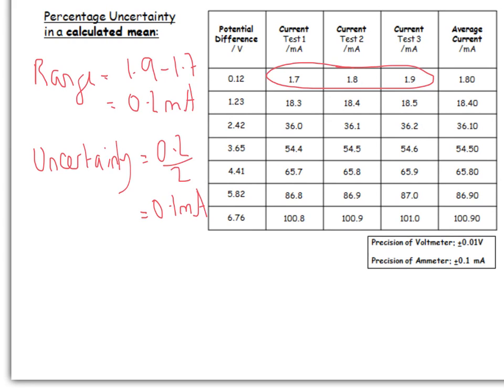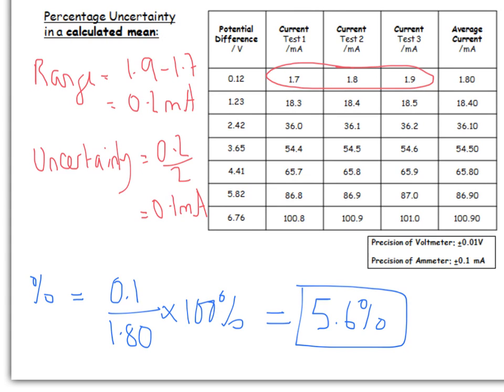Which means your uncertainty is going to be 0.2 divided by 2, which is 0.1 milliamps. Again, remembering to include the unit. So then your percentage uncertainty is going to be 0.1 milliamps divided by 1.80 times by 100, and that gives you 5.6%. If you compare it to the value from the previous question, where we were just using the 1.7 reading, we had a percentage uncertainty of 5.9. You can see we've actually, by taking an average, managed to reduce the overall uncertainty.